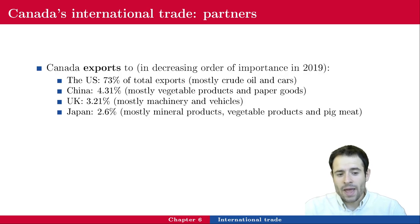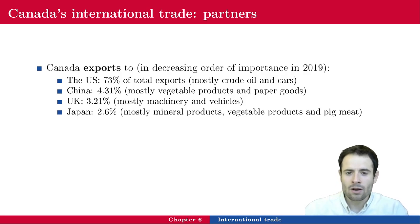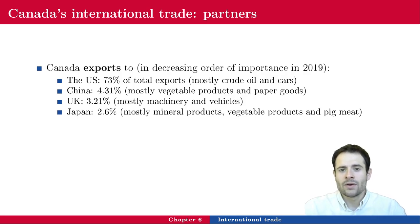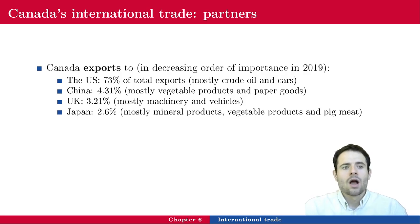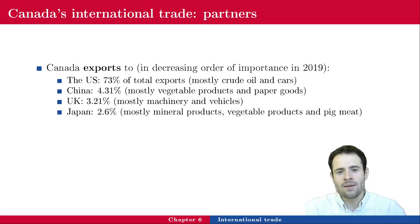Japan also imports a lot of pig meat from Canada. Japan is known for Wagyu and Kobe beef, and there is significant farming activity there, along with chicken in Japanese diets. However, fish is the dominant animal protein consumed in Japan, and they have a massive fishing industry.